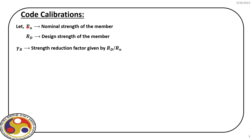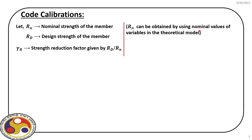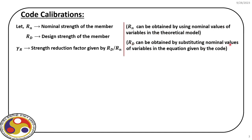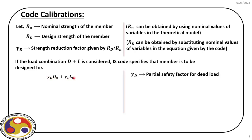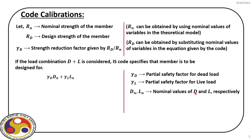The nominal strength rn is obtained from nominal values of variables using a theoretical model; the design strength rd is obtained from nominal values using codal provisions. We set a gamma_r so that the design strength is somewhat less than the nominal strength, providing reserve strength. In IS code, gamma_d is the partial safety factor for dead load and gamma_l is the partial safety factor for live load; dn and ln are the nominal values of the respective loads.